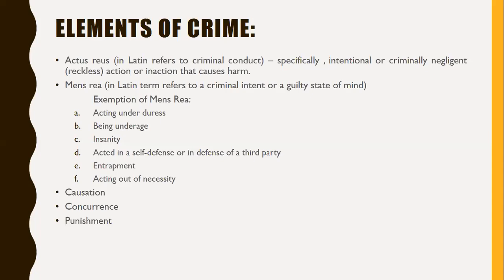Another element is mens rea, a Latin term referring to criminal intent or a guilty state of mind. Offenders who commit crimes with mens rea are held liable, but there are certain exemptions under extenuating circumstances such as: acting under duress — for example, committing robbery to save the life of a loved one; being under age, like a six-year-old child who picks up a gun; and insanity — a person is legally insane if at the time of the act they did not know its nature and quality.